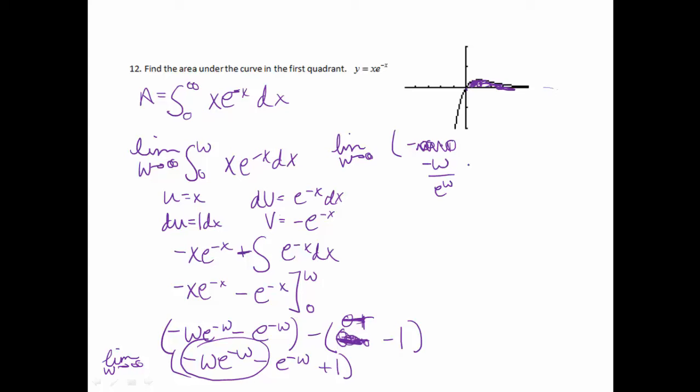Now notice if I plug in infinity, I'm going to get negative infinity over infinity, which sets me up to be able to use L'Hôpital's rule. So now if I take the derivative of the numerator, I'll get negative 1 over, the derivative of e to the w is just e to the w. Now if I plug in infinity, I'm going to get 0. So that answer will be, that whole answer will be 0.